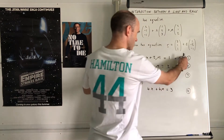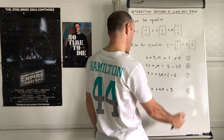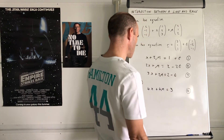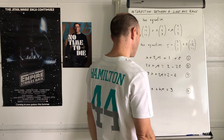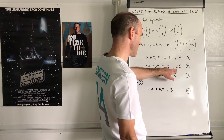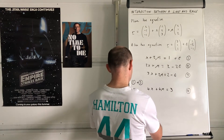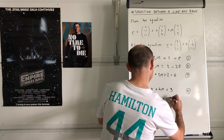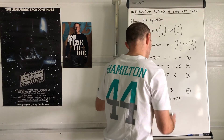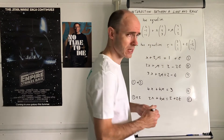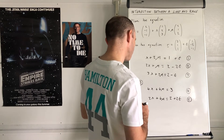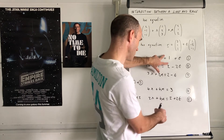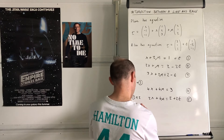We need another pair of equations to eliminate t again, giving us two equations in λ and μ only. Since we used equations 1 and 3, now use equations 1 and 2. Multiply equation 1 by 2 to get: 2λ + 4μ = 2 + 2t - call this equation 5. Then add equation 5 to equation 2.